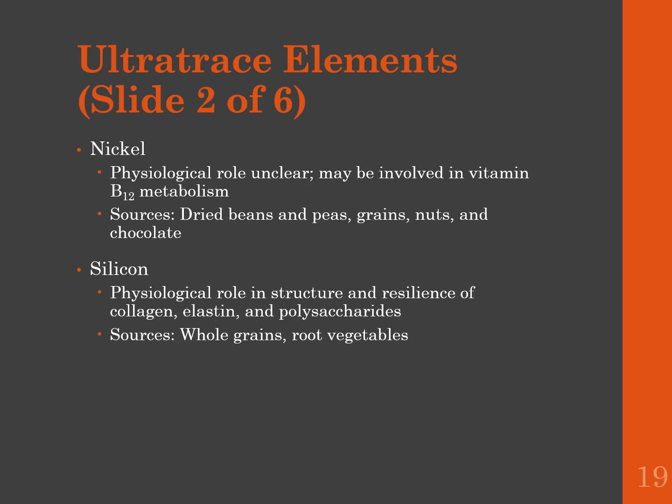Nickel's function in the body isn't totally understood, but it may have something to do with vitamin B12 metabolism and folic acid. Sources of nickel include dried beans, peas, grains, nuts, and chocolate. A nickel deficiency could result in suboptimal growth in adults, and inadequate nickel may alter trace element composition of bone and impair iron use — though research is still inconclusive.